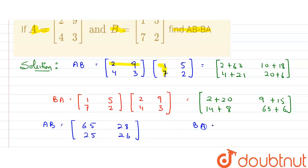And BA matrix will be equals to, 2 plus 20, that will be 22. 14 plus 8, that will be 22. 15 plus 9, 24. 63 plus 6, that will be 69 here.